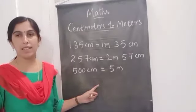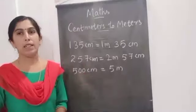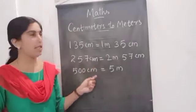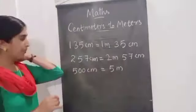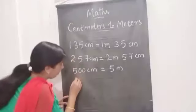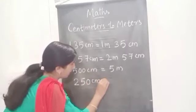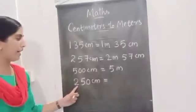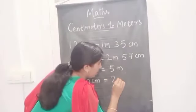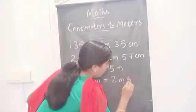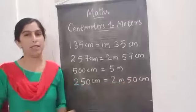Seven hundred — seven meters. Eight hundred — eight meters. Like that, you want to learn. It should be in your mind always, then only you can convert centimeters to meters. Now, 250 centimeters — two hundred and fifty centimeters — so you can write two meters and fifty centimeters.